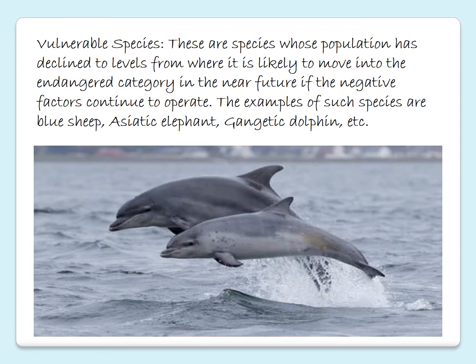Next is vulnerable species. These are the species whose population has declined to levels from where it is likely to move into an endangered category, if the negative factors continue to operate in the near future. Examples of such species are blue sheep, Asiatic elephant, gangetic dolphin, etc.